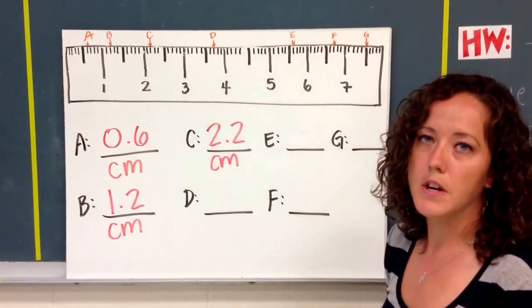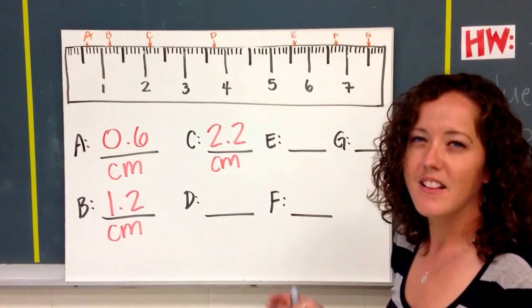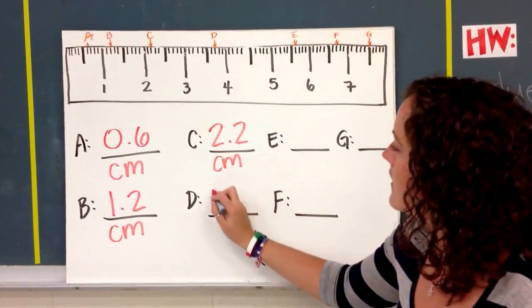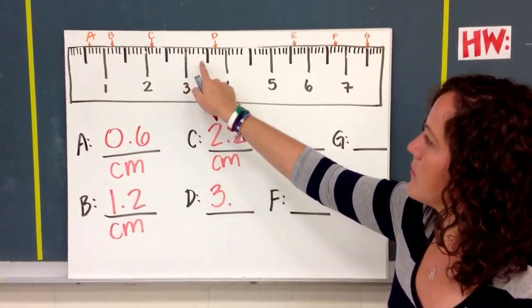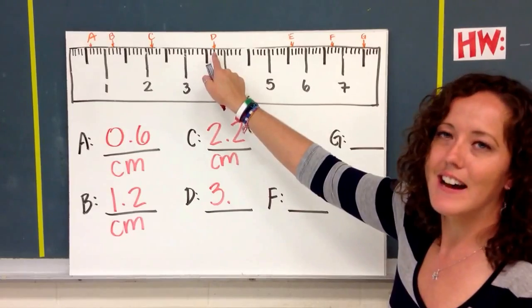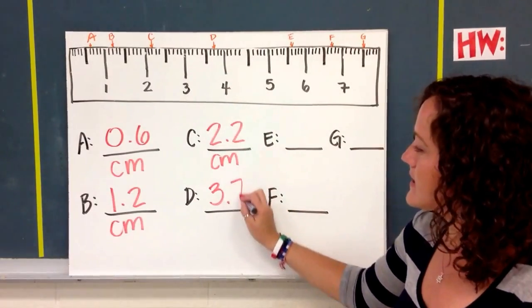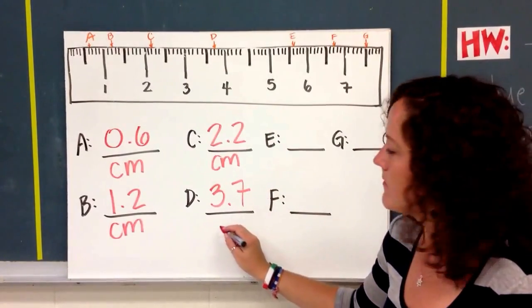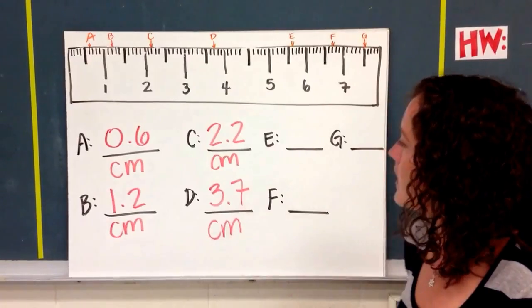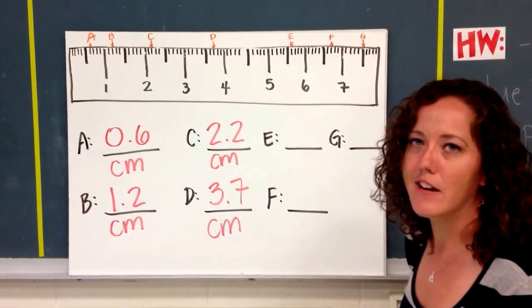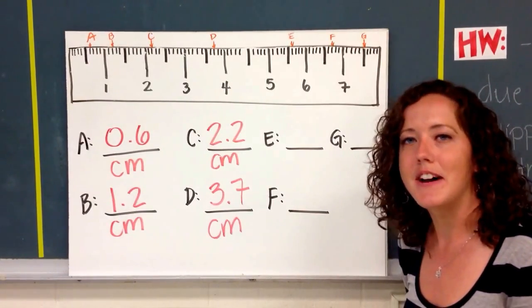Letter D is between the 3 and the 4, so this means we'll have a decimal a little bit bigger than 3. When you count, you should find that we have 7 lines after the 3, which means that our decimal point will be 0.7. Do E, F, and G on your own, and if you need to pause it, then that's fine.